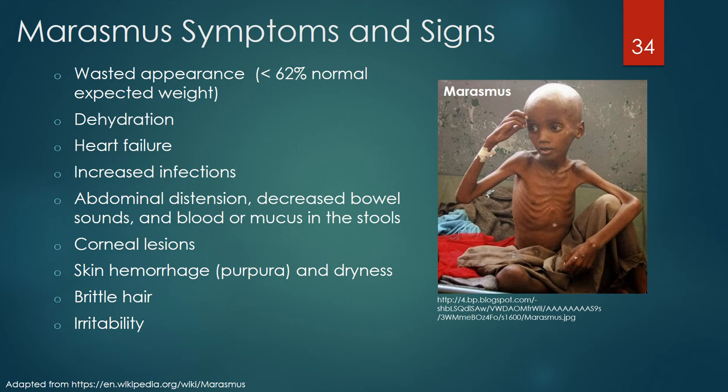Other manifestations of marasmus include heart failure, increased infections including pneumonia, skin, ear and nasal infections, abdominal distension, decreased bowel sounds and blood or mucus in the stools, corneal lesions of the eye associated with vitamin A deficiency, skin hemorrhage and purpura, dryness, brittle hair, and irritability.